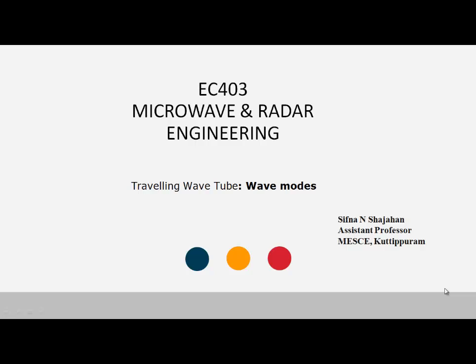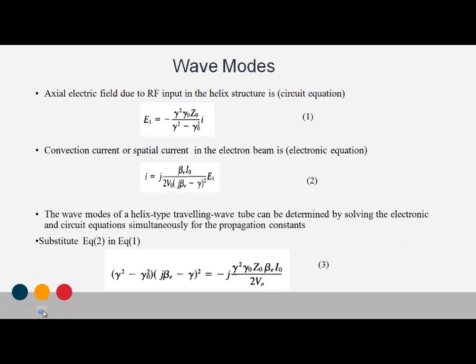Wave modes in travelling wave tube. In the last class, the circuit equation and electronic equation were derived. The circuit equation relates the RF input to the axial electric field being generated. The electric field equation is the circuit equation: E1 is equal to minus gamma squared times gamma-nought times Z-nought, divided by gamma squared minus gamma-nought squared, into EI.